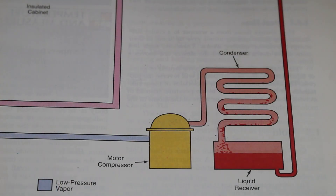In the condenser, we have latent heat of condensation, where we change state from a vapor into a liquid. Our refrigerant has changed state, but we did not have a change in temperature.